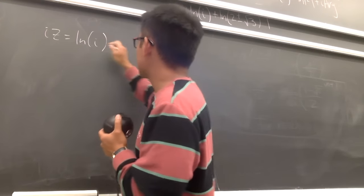Dividing everything by i: z equals pi over 2 plus (1 over i) times ln(2 plus or minus square root of 3). To rationalize 1 over i, multiply numerator and denominator by i — since i squared equals negative 1, we get negative i on the bottom, so 1 over i equals negative i. Therefore z equals pi over 2 minus i times ln(2 plus or minus square root of 3).